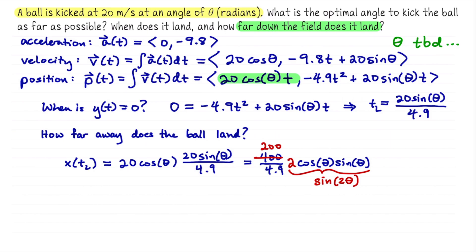Because now we can take 2 cosine of theta sine of theta and replace that with sine of 2theta. This isn't mandatory. I just prefer seeing it this way because I'm about to take a derivative in order to solve an optimization problem. And like this, I avoid the product rule. I just have one single trig function to differentiate.